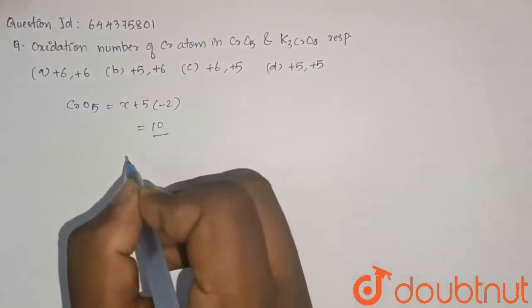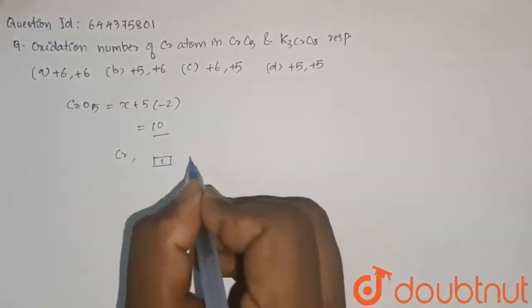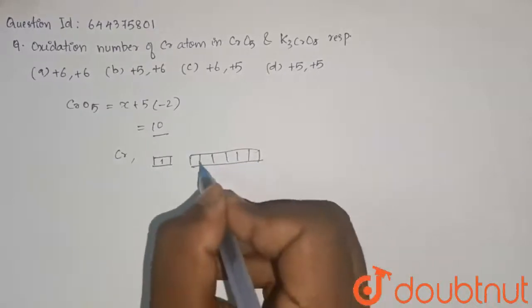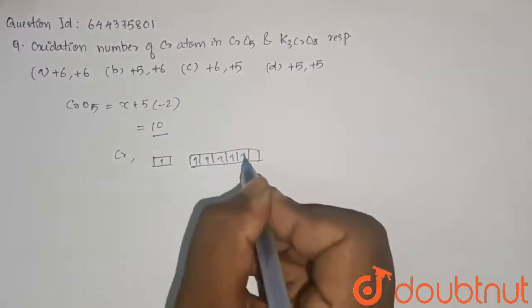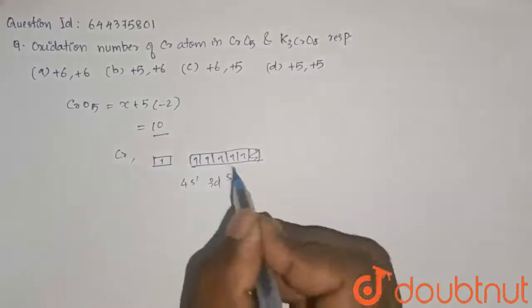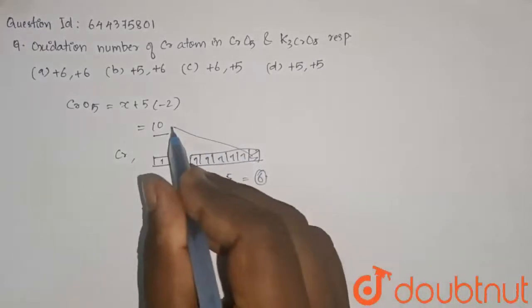Let us take the valence electron configuration of Cr, which is 4S1 and 3D5. Here the maximum can be 6. So 10 is not possible.